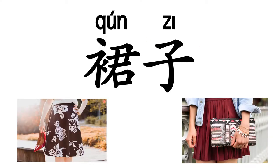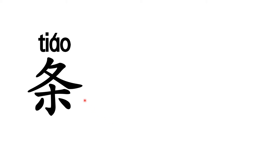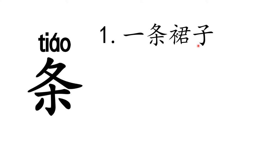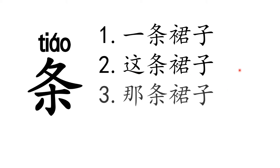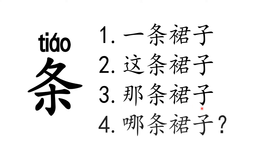裙子 means 'skirt'. This is 黑色的裙子. This is 红色的裙子. The measure word for 裙子 is 条. 一条裙子 means 'a skirt', 这条裙子 means 'this skirt', 那条裙子 means 'that skirt', 哪条裙子 means 'which skirt?'